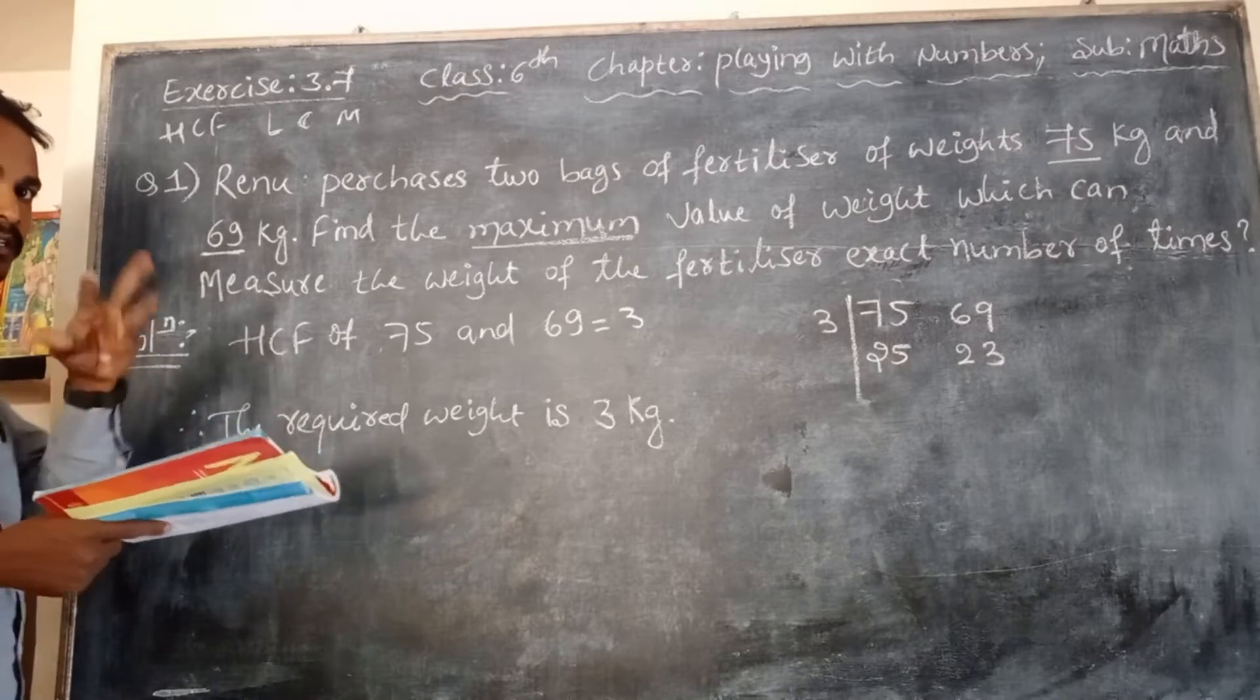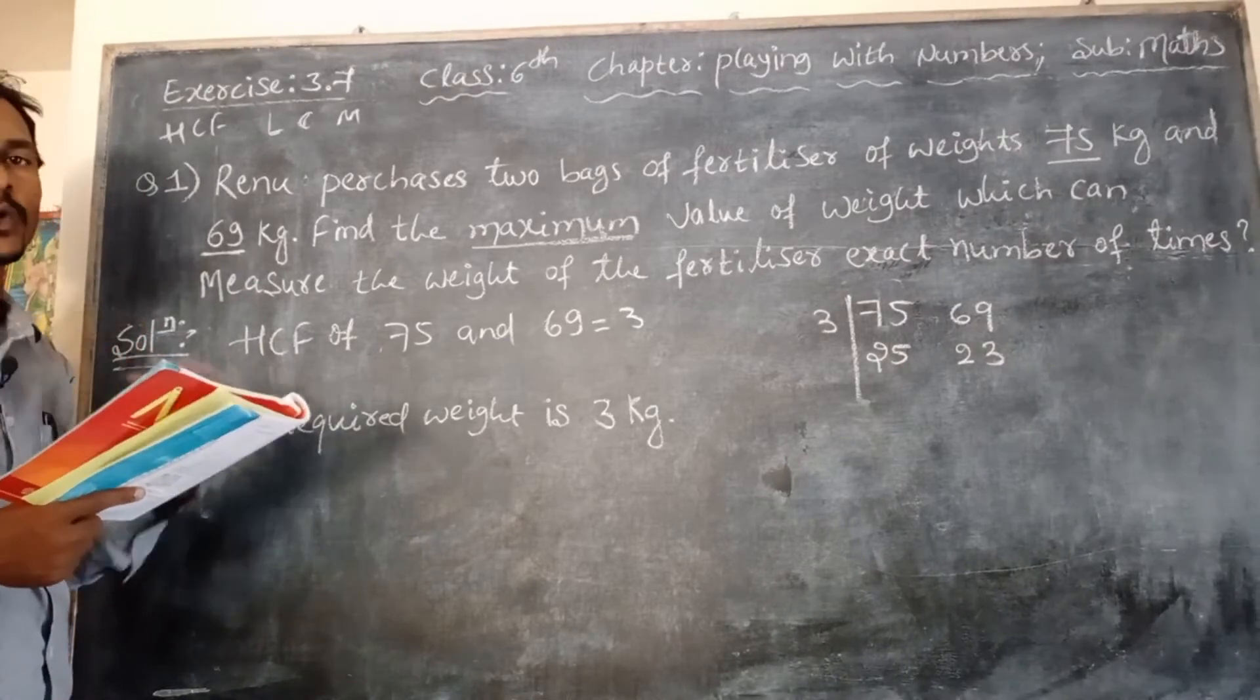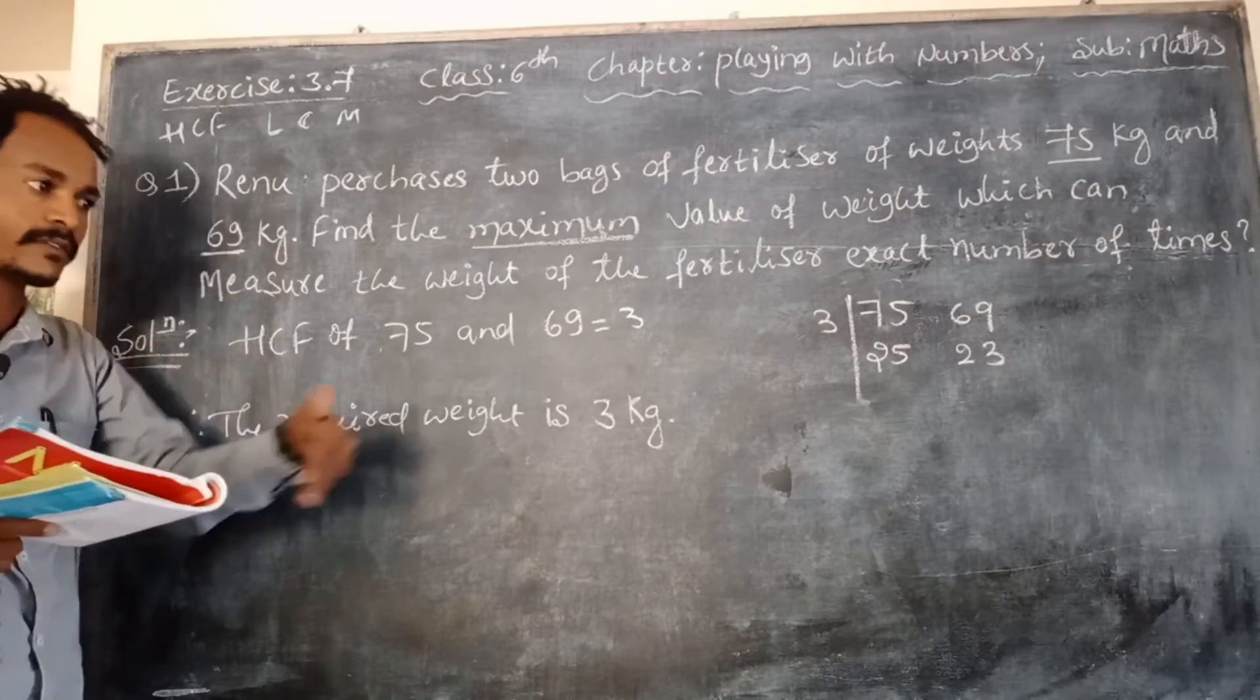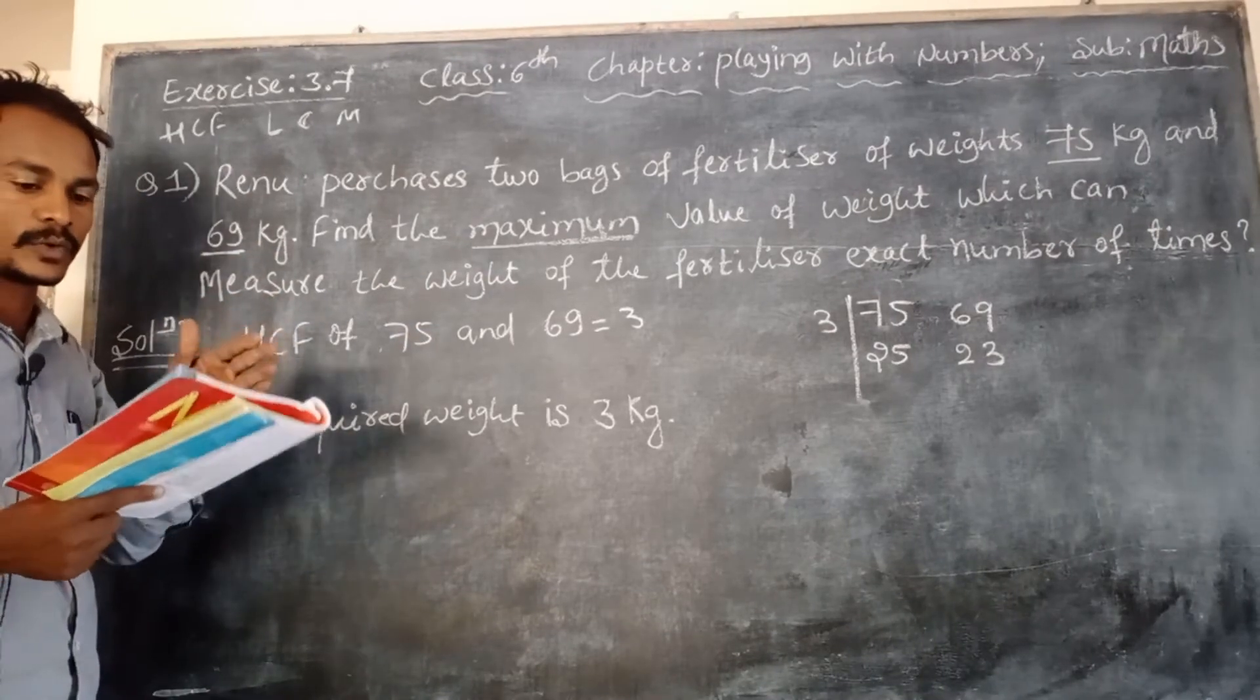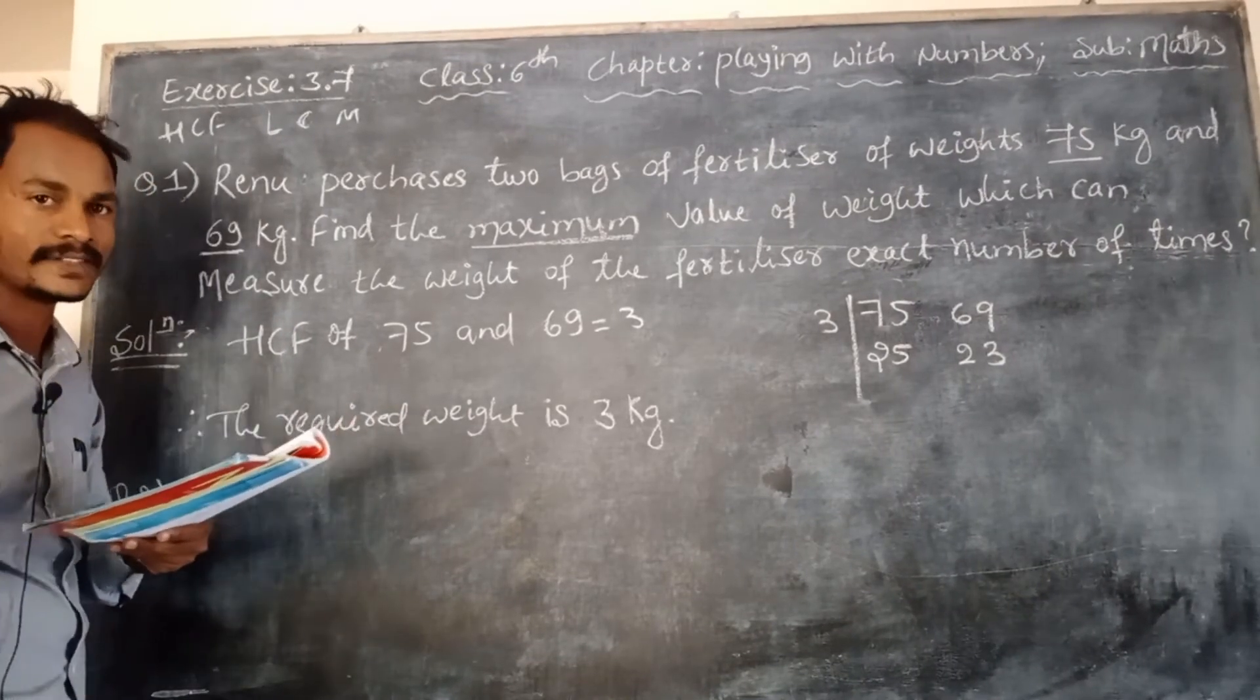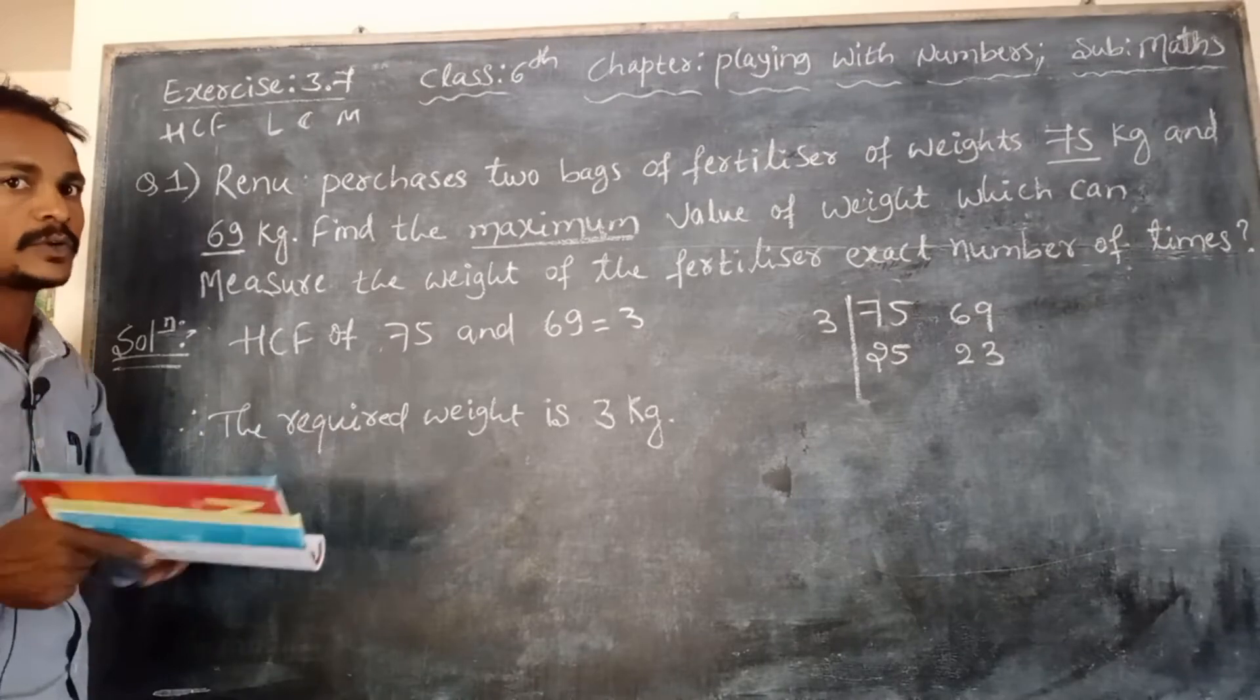Understand that. Three boys step up together from the same spot. In the same spot, they walk. Just the total of the steps, so the distance: 63 cm, 70 cm, and 77 cm respectively.